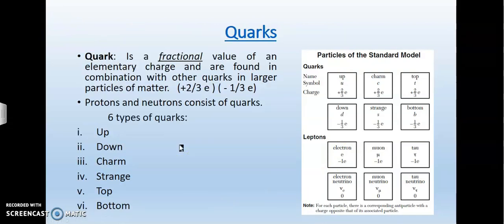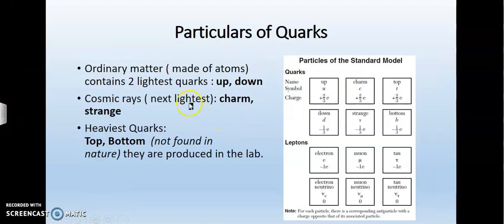As I mentioned earlier, a quark has a fractional value of an elementary charge and is found in combination with other quarks in larger particles of matter. The proton and the neutron consist of quarks. There are six known types of quarks: up, down, charm, strange, top, and bottom. The particulars of quarks: ordinary matter, which is made of atoms that you would find on the periodic table, contains the two lightest quarks, the up and the down. But cosmic rays, which are the next lightest, contain a charm and a strange. The heaviest quarks, top and bottom, which are not found in nature, are produced in a laboratory.